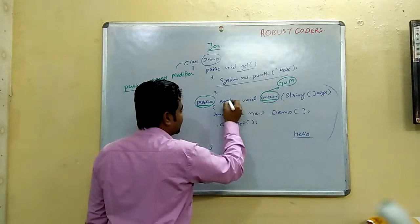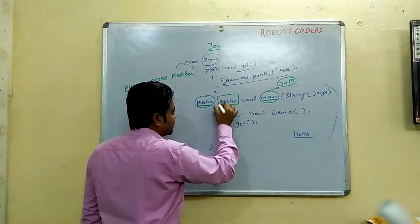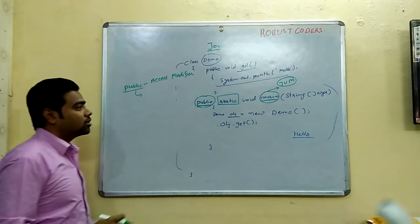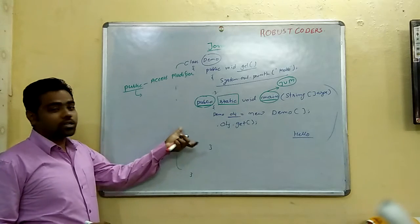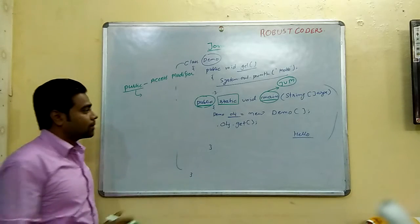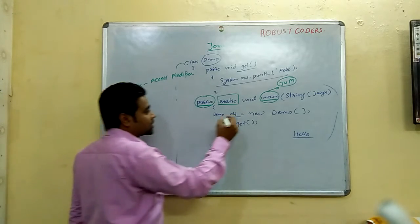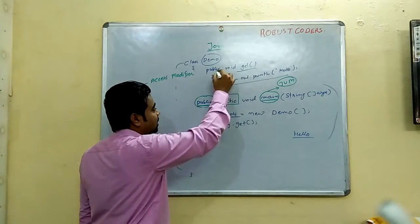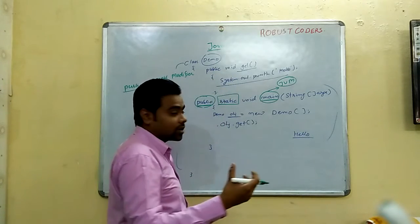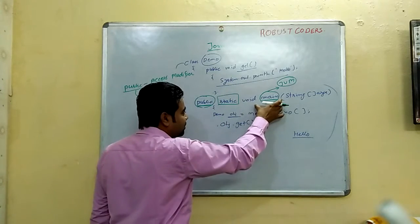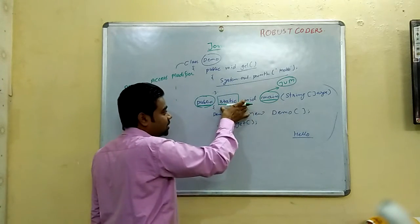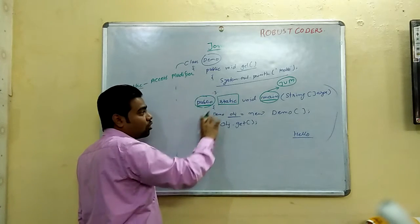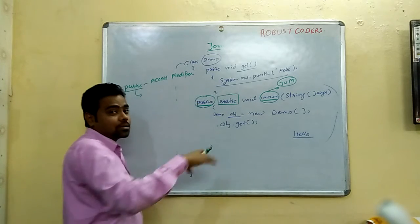Static. The static keyword means that JVM can call this method without creating an object. JVM does not need to create an object to call the main method. That is why it is declared as static.